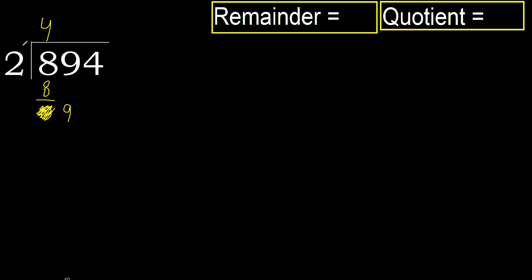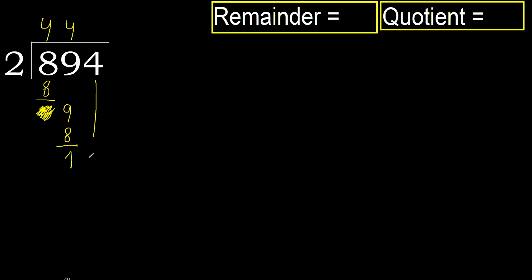9. 2 multiplied by 5 is 10, which is greater. 2 multiplied by 4 is 8, which is not greater. Subtract, then next.